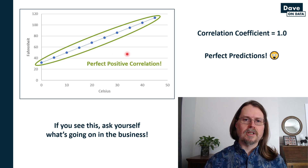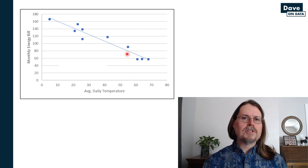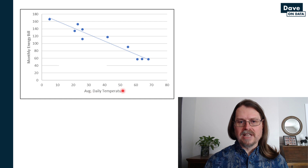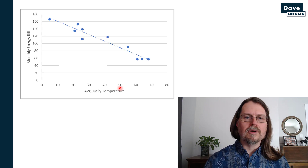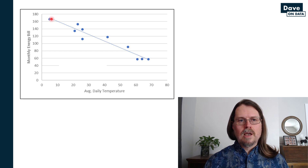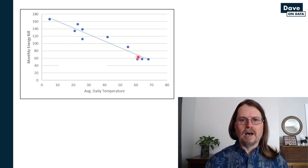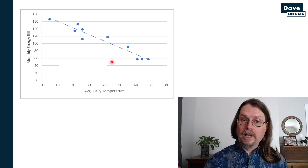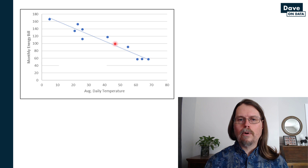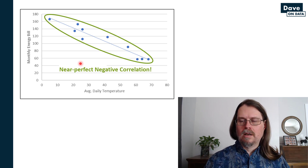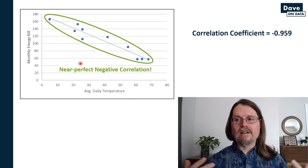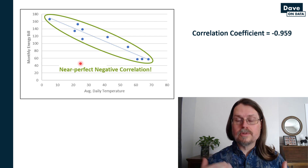So that's perfect positive correlation. Next up, we have the counter example. It's another contrived example showing average daily temperature on the x-axis and the monthly energy bill on the y-axis, in degrees Fahrenheit. There's some data points, and if we plot a simple linear regression line, we see a downward sloping line from the top left to the bottom right — indicative of negative correlation. Most of the dots are pretty close to this hypothetical line, so this is near perfect negative correlation. The correlation coefficient for these data is negative 0.959, very close to negative 1, the lower bound.